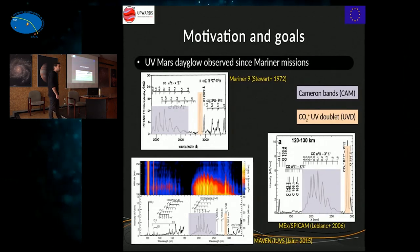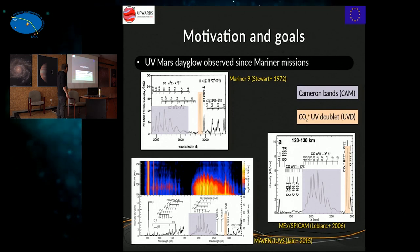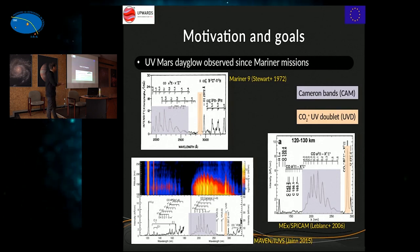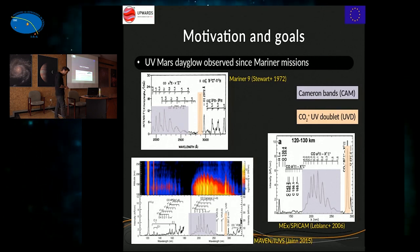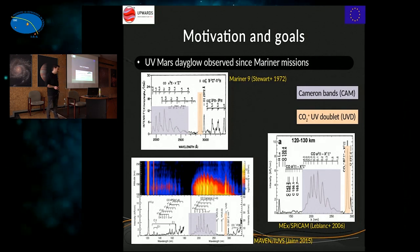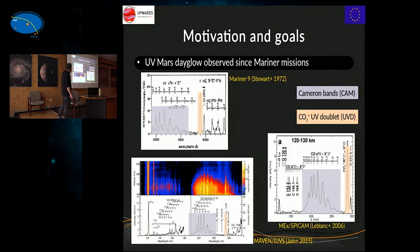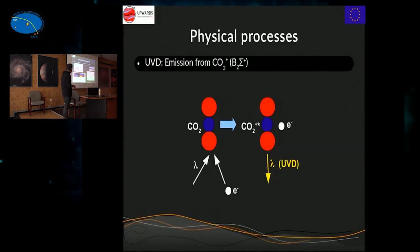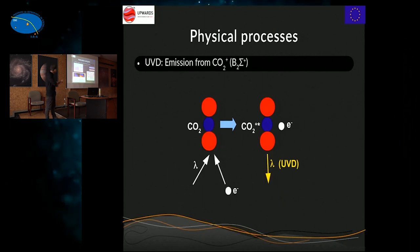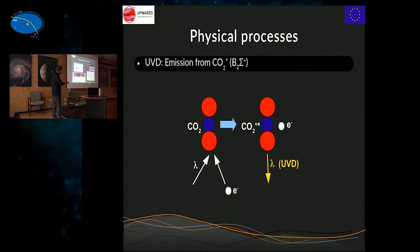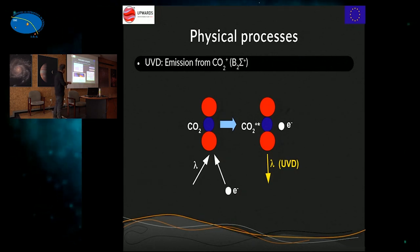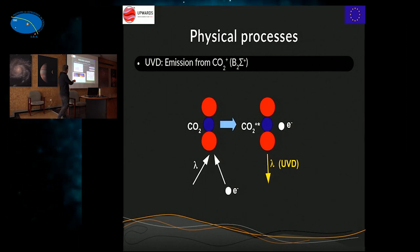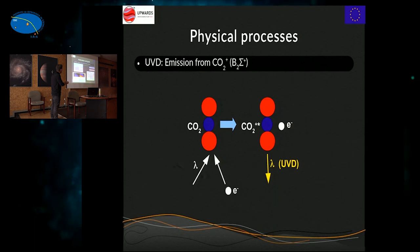Now let's go to science. In the first part, I will summarize a paper published last year on dayglow in the day side of the planet, using observations from the SPICAM instrument on Mars Express and the global climate model. The dayglow of Mars has been observed since the Mariner missions in the 1970s. I'm going to focus on the two most prominent emission systems in the UV: the Cameron bands, extending from 180 to 260 nm, and the UV doublet at around 290 nm.